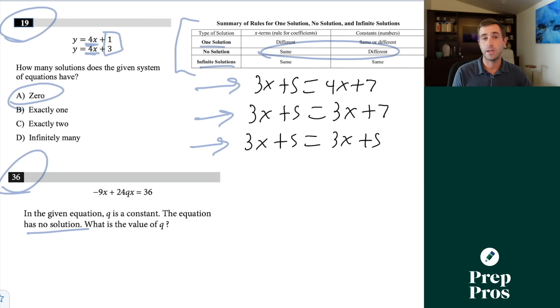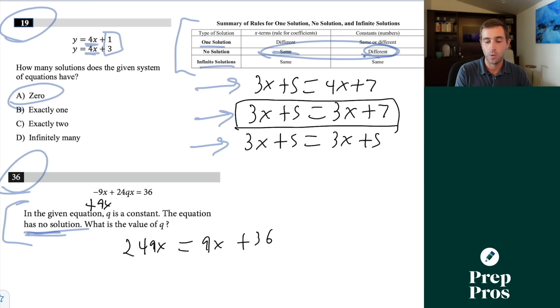This is the trickier variation where we have to solve for a constant that's going to make no solutions, infinite solutions, or one solution. Here we're told q is a constant and the equation has no solution. That tells me my x terms must be the same, my constants must be different. They're easier to remember in this form, so I'll rewrite this as 24qx equals 9x plus 36. Since we know our x terms must be the same, we can say 24qx equals 9x. To solve for q, we divide both sides by 24x, giving us q equals 3 over 8.